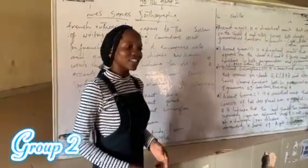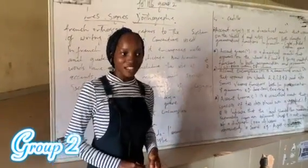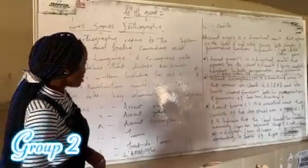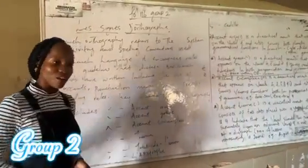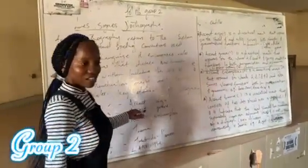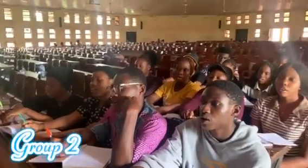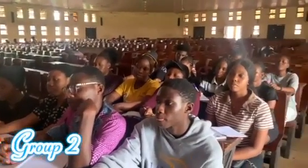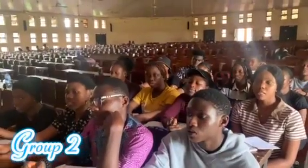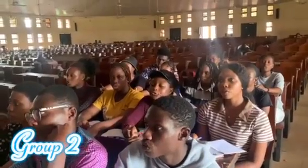It also helps in correcting our spellings and our pronunciations. The seven signs are: accent aigu, accent grave, accent circonflexe, tréma, trait d'union, l'apostrophe, and the cédille.